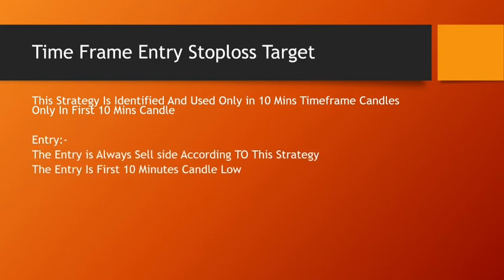The entry is always on the sell side, because we enter once the gap-up starts. The market must gap up at least 20 points in Bank Nifty for this strategy to apply. The full backtest of Bank Nifty confirms this strategy takes only sell-side entries. The entry trigger is the low of the first 10-minute candle — we mark that level and wait. Once the market breaks below the first 10-minute candle low, we enter for a sell-side move.